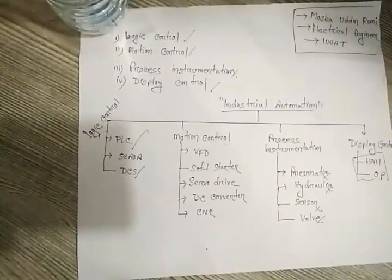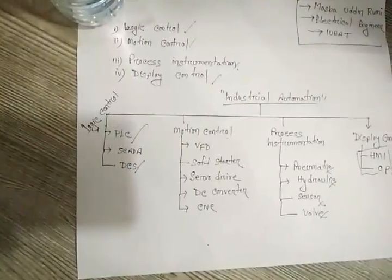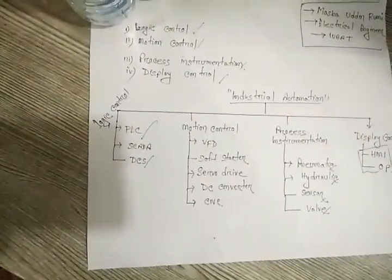Third is servo drive and fourth is DC converter. The last one is CNC system. CNC means computer numeric control.